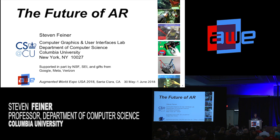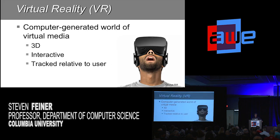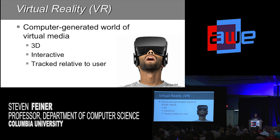In order to give a talk about the future in an intro track, I wanted to make sure we're all on the same page in terms of the terms we're using. I'm going to start by defining AR by defining VR, the way that researchers like me like to think of it. We think of VR as essentially a computer-generated world of virtual media that is 3D — which encompasses 2D things as well — it's interactive, and it is tracked in terms of position and orientation relative to the user.